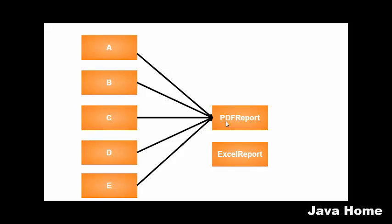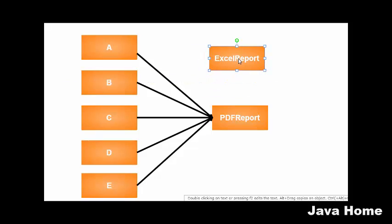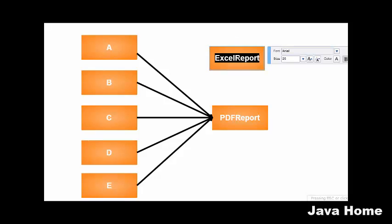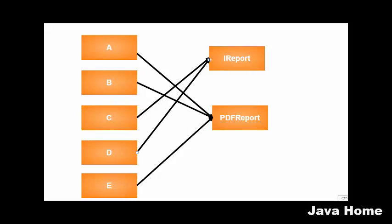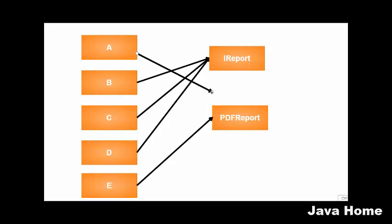So now let us redesign the same example using abstraction. Abstraction says: hide the implementation details and just present the features. Interfaces contain only abstract methods without a body, so they don't contain any implementation details — they just contain method signatures. So I am introducing an interface called 'Report' here, and instead of these classes referring to the implementation, I want them to refer to the interface. The interface contains only features; it doesn't contain any implementation details.